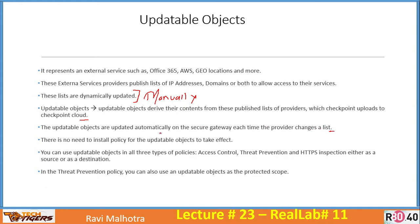The updatable objects are updated automatically on the security gateway each time the provider changes a list. The objects on Check Point cloud get updated automatically from the exact service provider. There is no need to install policy for the updatable objects to take effect — if their IP address changes, everything happens in the backend automatically.